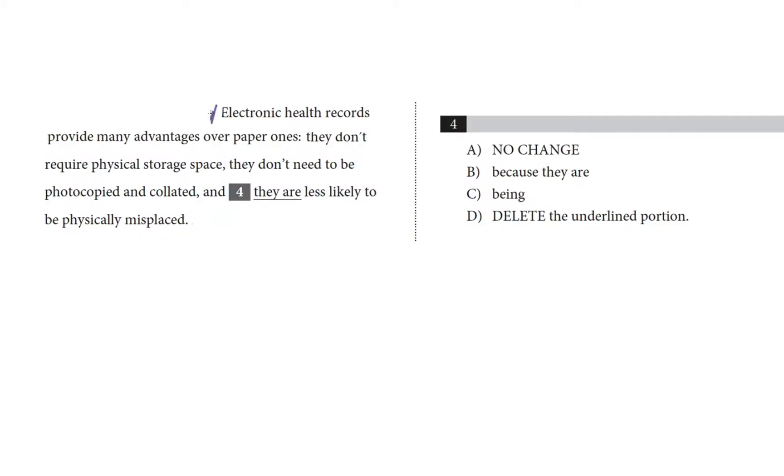Let's take a look at question 4 here. Electronic health records provide many advantages over paper ones. They don't require physical storage space, they don't need to be photocopied and collated, and they are less likely to be physically misplaced.